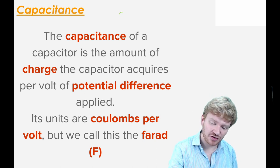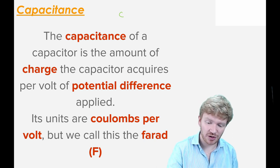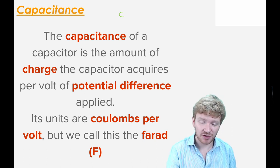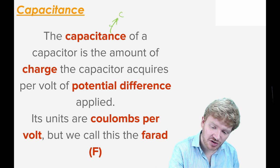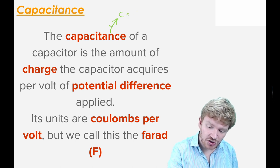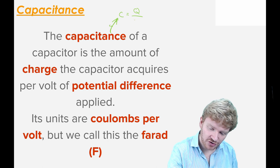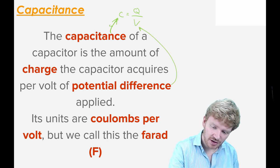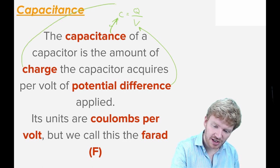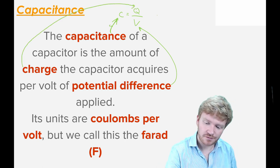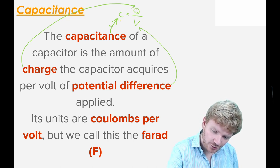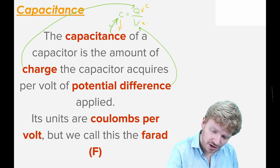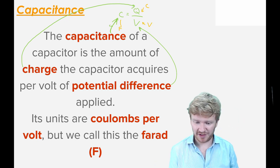So go ahead and see if you can work out what the equation will be. We give capacitance the symbol C — which is confusing because C is also the unit of the coulomb. C is capacitance, Q is charge, and V is voltage. So this is where you have to be really careful. The units are the farad for C, the coulomb for Q, and the volt for V.